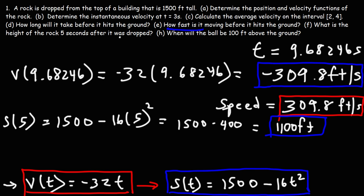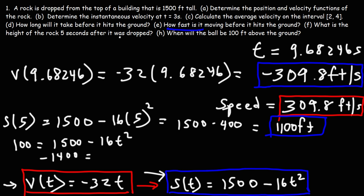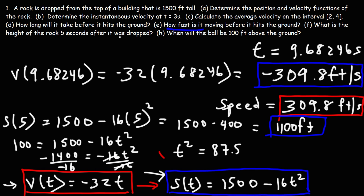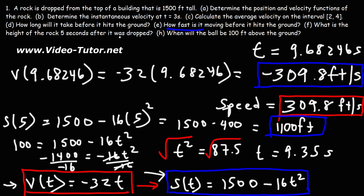When will the rock be 100 feet above the ground? We replace s(t) with 100: 100 = 1500 minus 16t squared. Subtracting 1500 from both sides gives negative 1400 equals negative 16t squared. Dividing both sides by negative 16 gives t squared equals 87.5. Taking the square root gives t approximately 9.35 seconds. So at 9.35 seconds it will be 100 feet above the ground, and at 9.68 seconds it hits the ground.